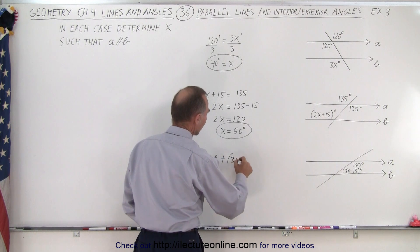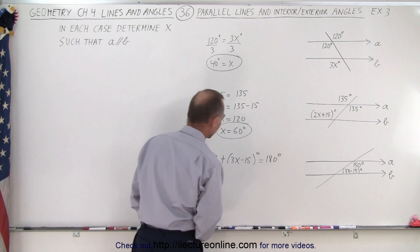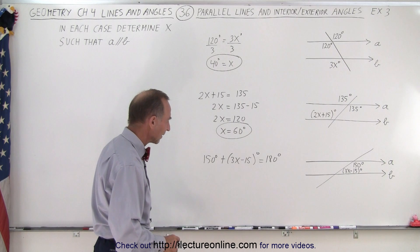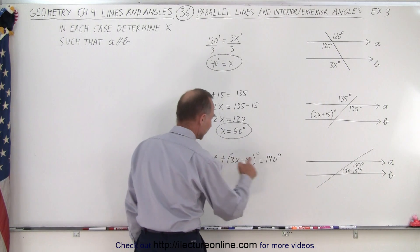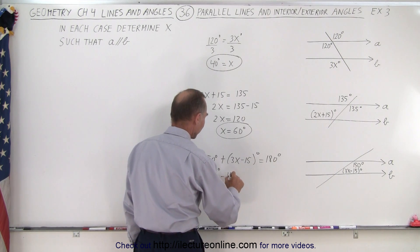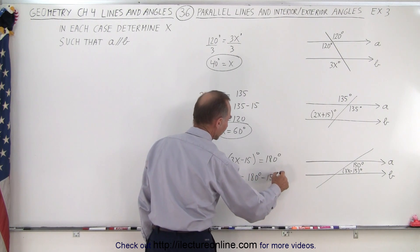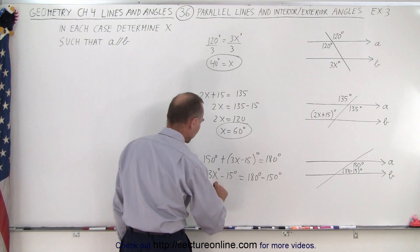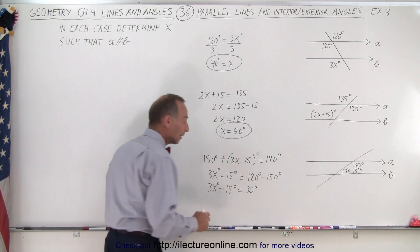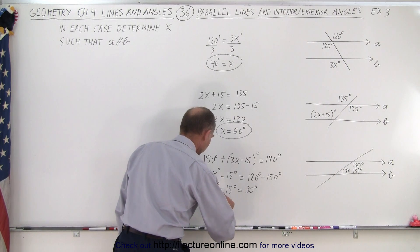All right, so the first thing I can do is subtract 150 from both sides, so we have 3x degrees minus 15 degrees is equal to 180 degrees minus 150 degrees, or in other words 3x degrees minus 15 degrees is equal to 30 degrees. Now we can add 15 degrees to both sides, so I have 3x degrees is equal to 30 degrees plus 15 degrees.